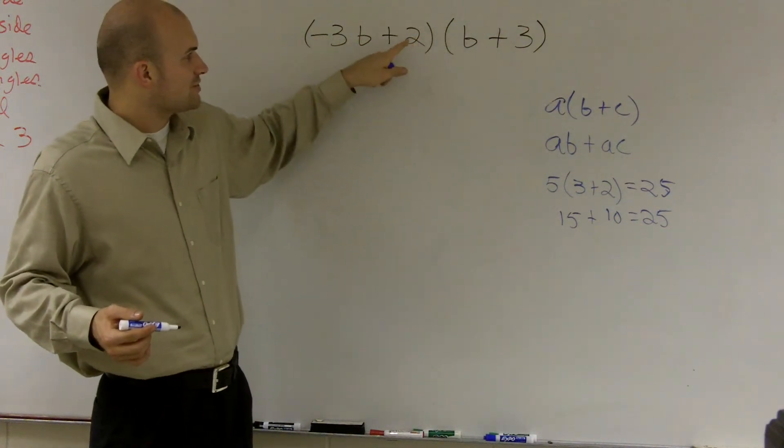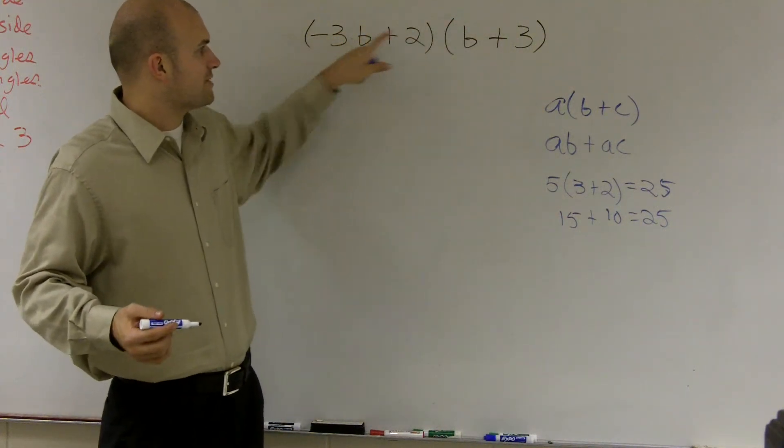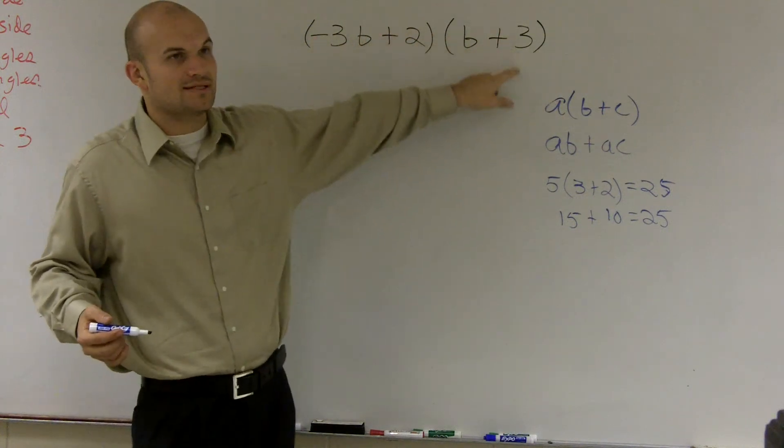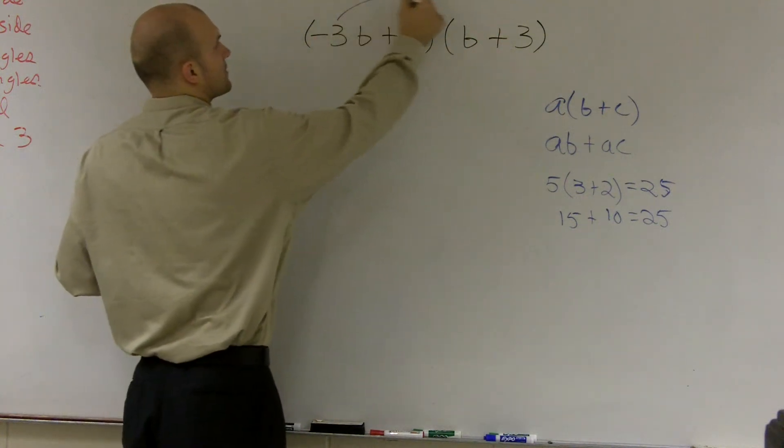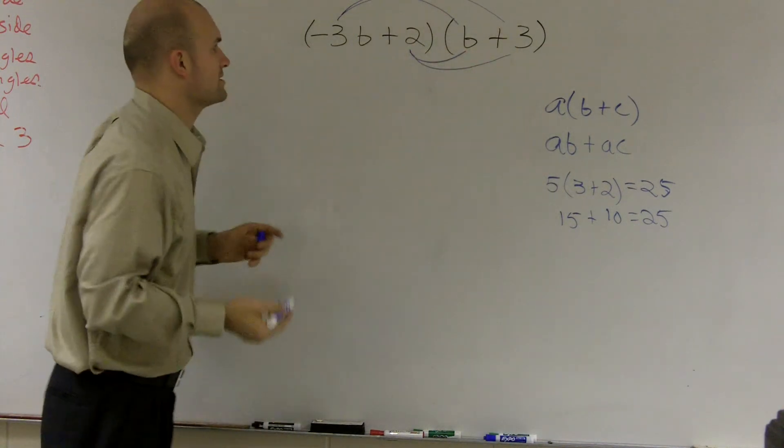So what we have to do, instead of just doing the 2 times the b and the 2 times the 3, we also have to do the negative 3b times the b, and the negative 3b times the 3. So we have to do it like this, and we have to do this one. So you have to do distributed property twice.